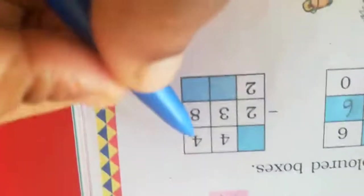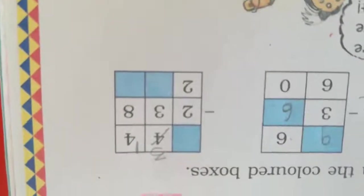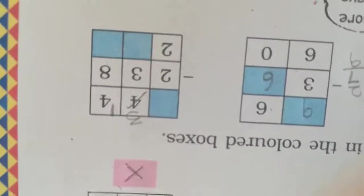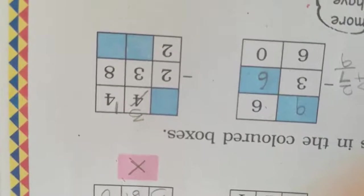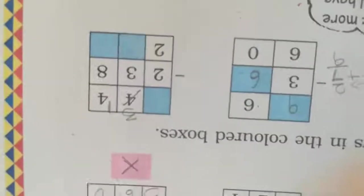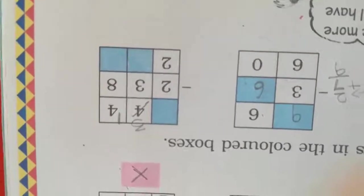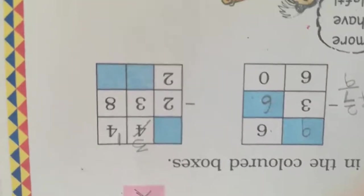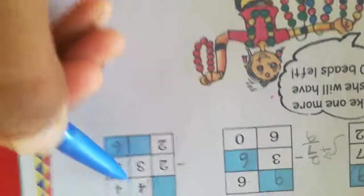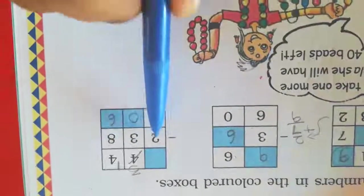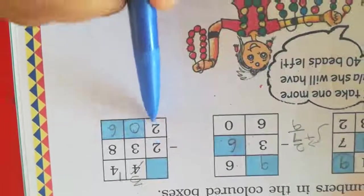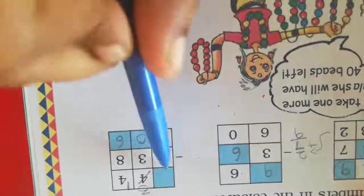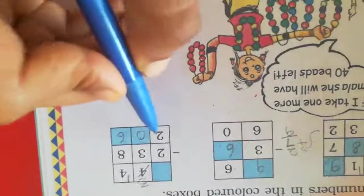Next, 4 minus 8 is not possible, so we borrow — 14 minus 8. Keep 14 in your mind, count after 8: 9, 10, 11, 12, 13, 14 — that's 6 fingers. Next, 3 minus 3: if it's the same number the answer is 0. The answer is already 0. To find the first number, add the answer and the middle number: 2 plus 2 is 4.